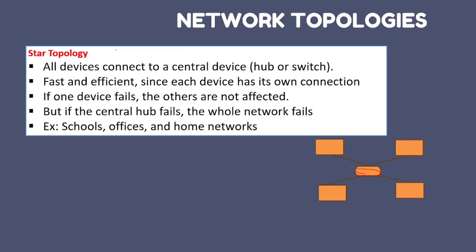Star topology has a central device — either a switch or a hub — to which all devices are connected. It is fast and efficient because each device has its own connection. If one device fails, it will not affect the network. But if the central hub or switch fails, the whole network collapses.